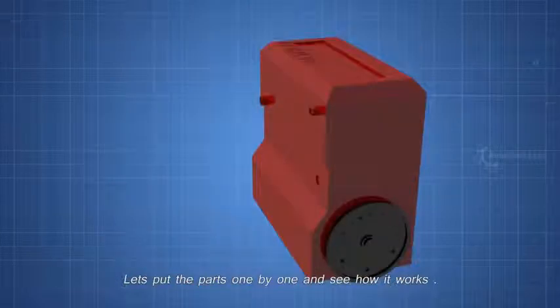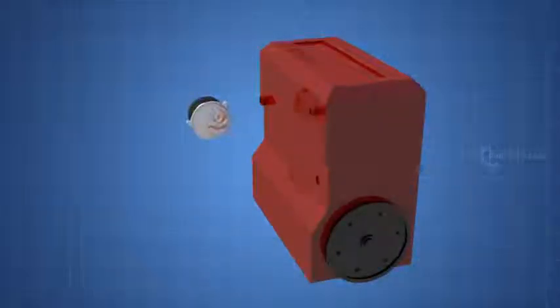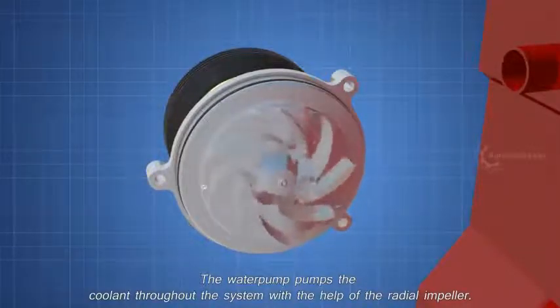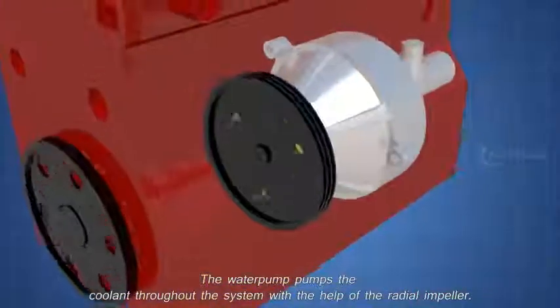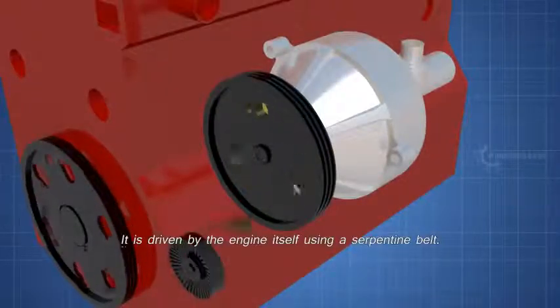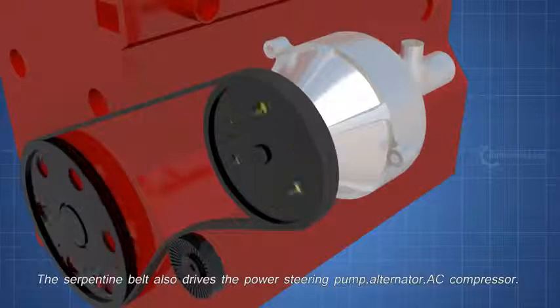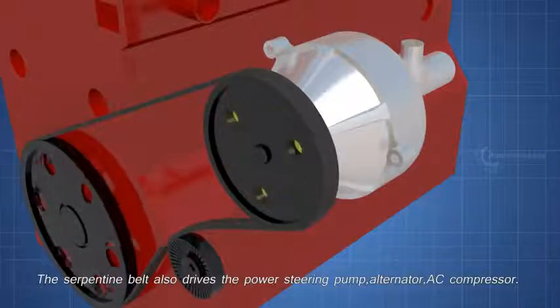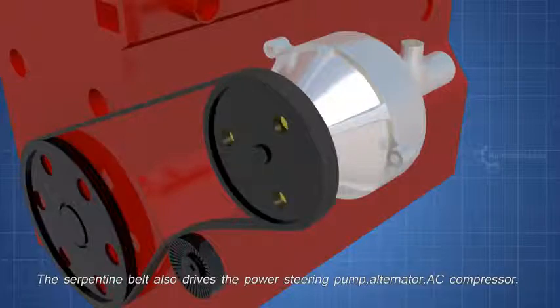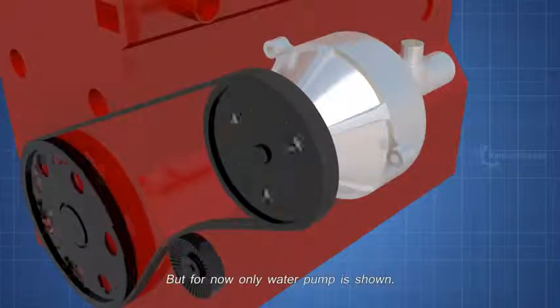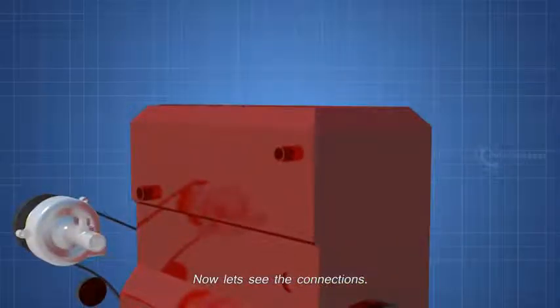Let's put the parts one by one and see how it works. The water pump pumps the coolant throughout the system with the help of the radial impeller. It is driven by the engine itself using a serpentine belt. The serpentine belt also drives the power steering pump, alternator, AC compressor. But for now only water pump is shown.